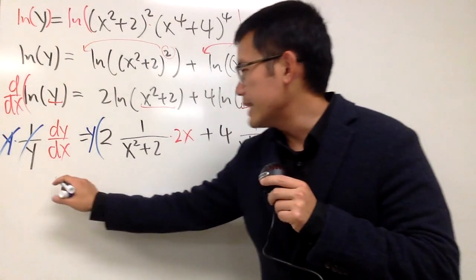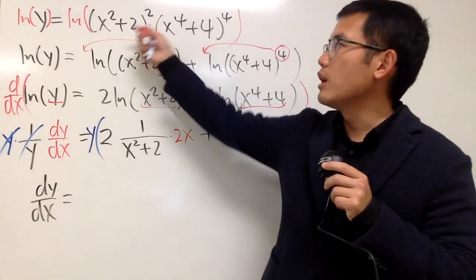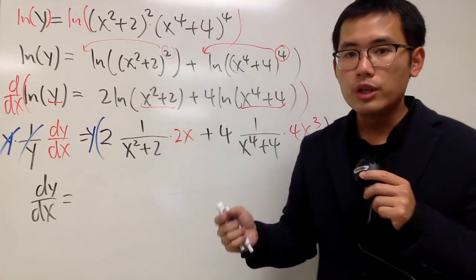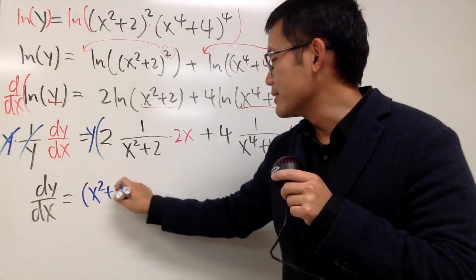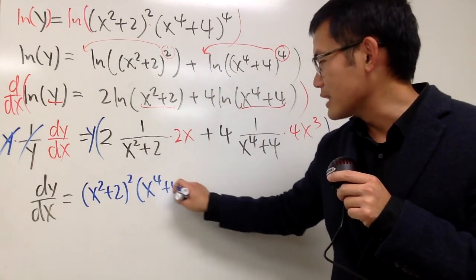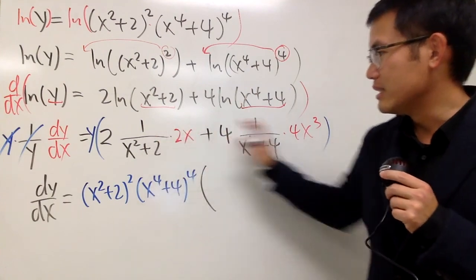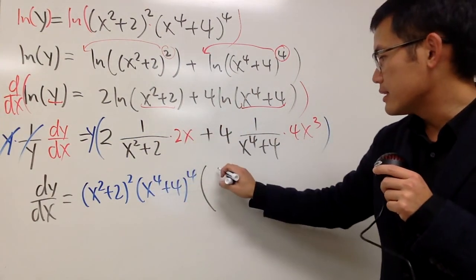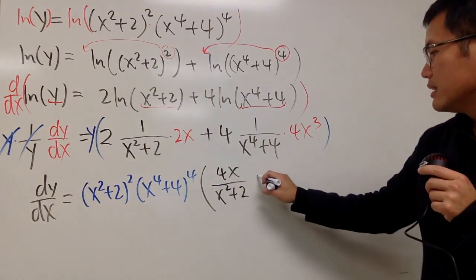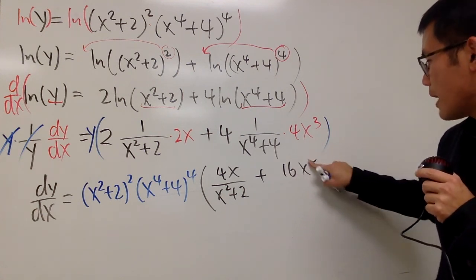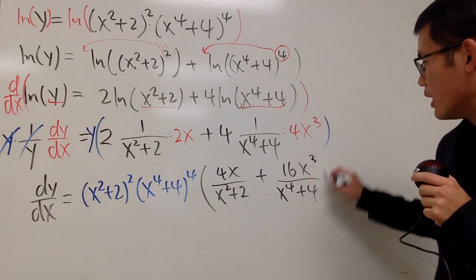Finally, dy/dx equals y — the y in blue is the original function — so I'll substitute the original expression: the parentheses contain x squared plus 2 squared times x to the fourth power plus 4 to the fourth power. Then we multiply by what's inside the brackets: 2 times 2 gives us 4x over x squared plus 2, and then plus 16x to the third power over x to the fourth power plus 4.